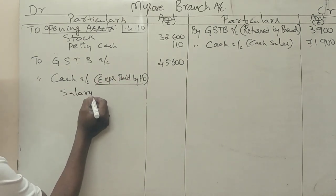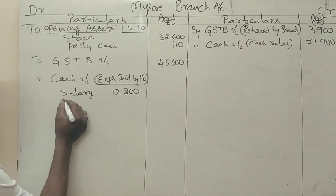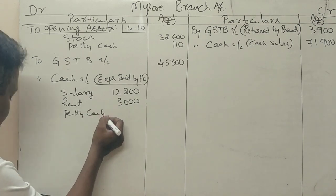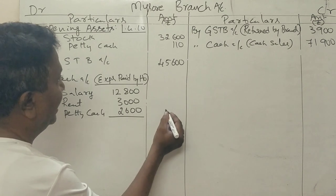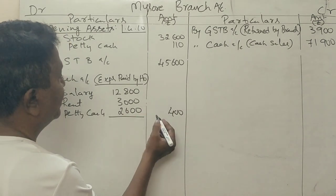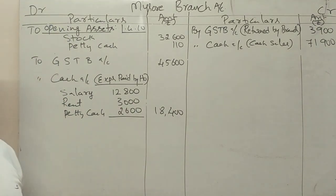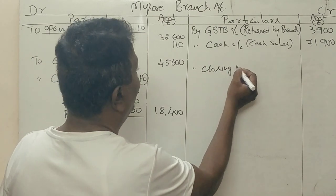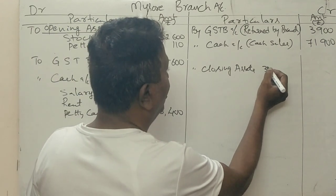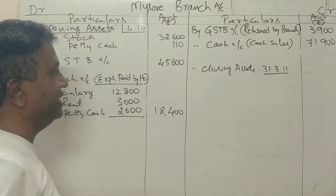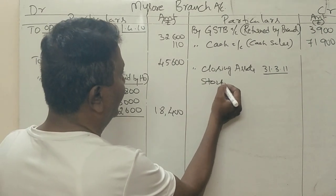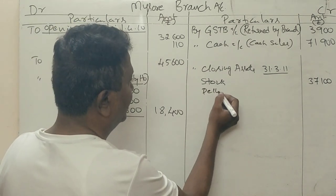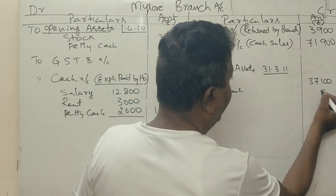Salary is 12,800 rupees, rent is 3,000 rupees, and petty cash expenses are 2,600 rupees. Total expenses paid by head office amount to 18,400 rupees. Now we record the closing assets: closing stock at branch — 3,700 rupees and closing petty cash — as of 31st March 2011.